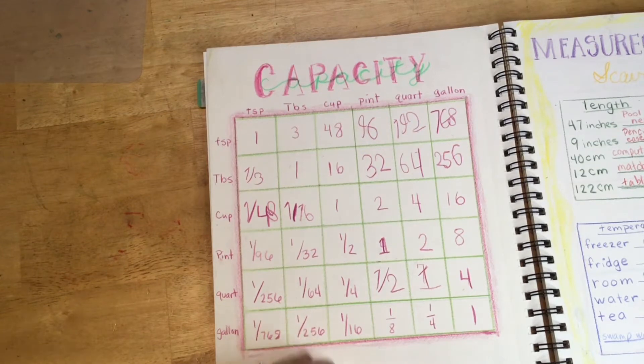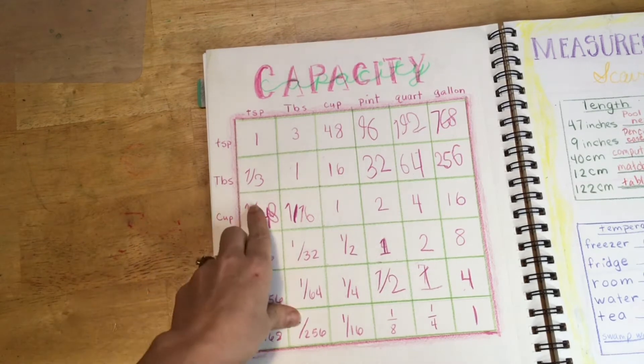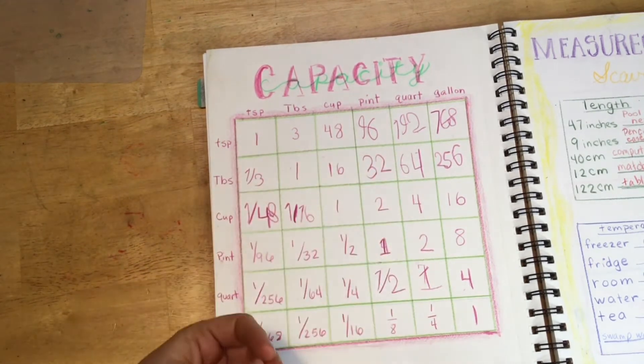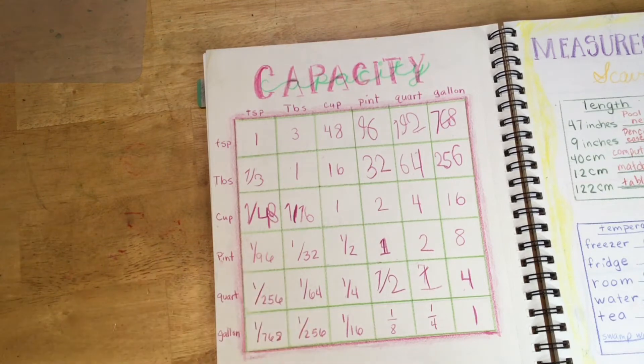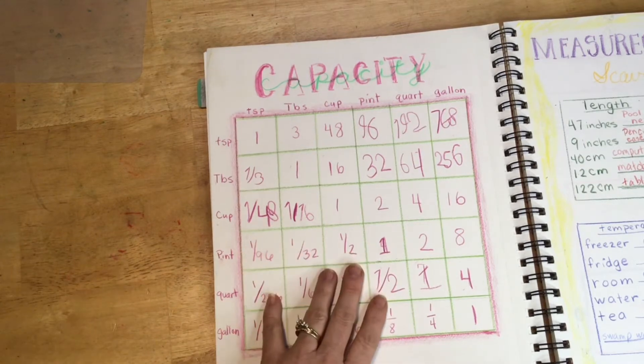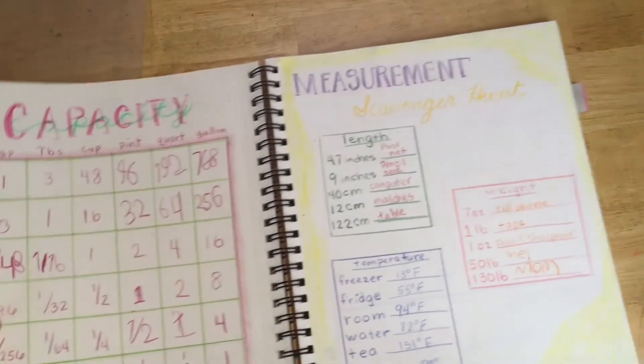So with a Charlotte Mason style narration, when a child starts out or even Brave Writer also, you write for them. So when she, to keep her interest, when she loses interest in writing the numbers, then I will begin to write the numbers for her. She still is telling me the answers verbally, but I am writing down so that we have a copy of that in our notebooks.